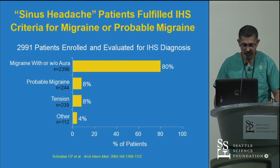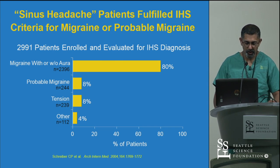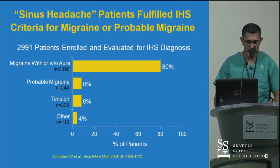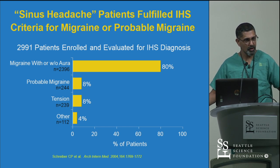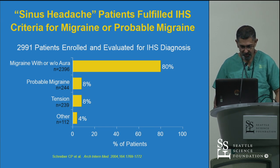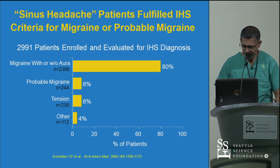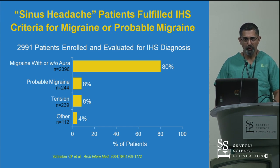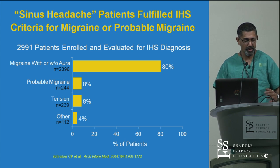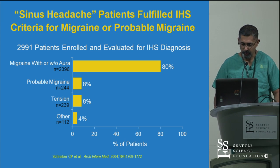There's a nice study quoted a lot — about 3,000 patients who present with a sinus headache — and lo and behold, most of them, almost all of them, fulfill the IHS criteria for a migraine. So I think before operating on patients where the primary complaint is headache, it's important to think about that.